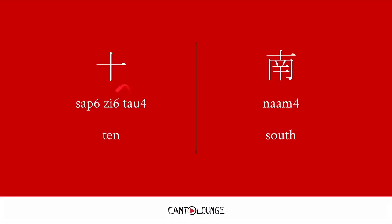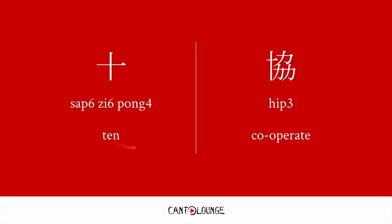Radical 46: 十字頭, which is on the top — for example, 南, meaning south. And 十字旁, if it's on the side — 協, meaning cooperate.